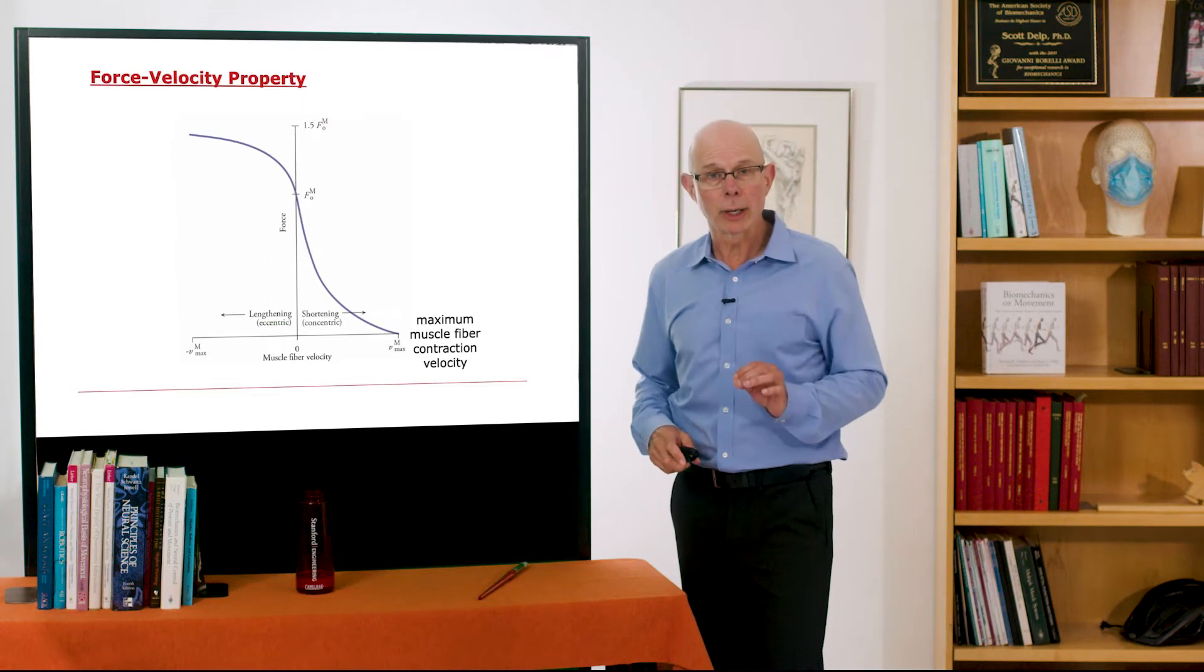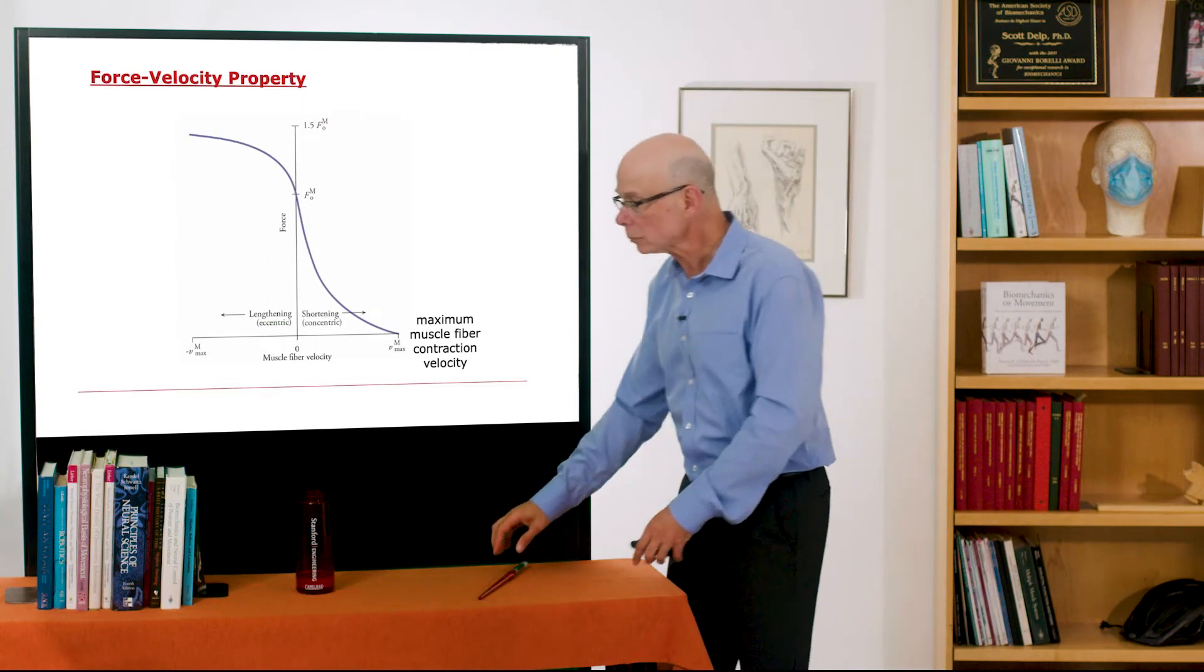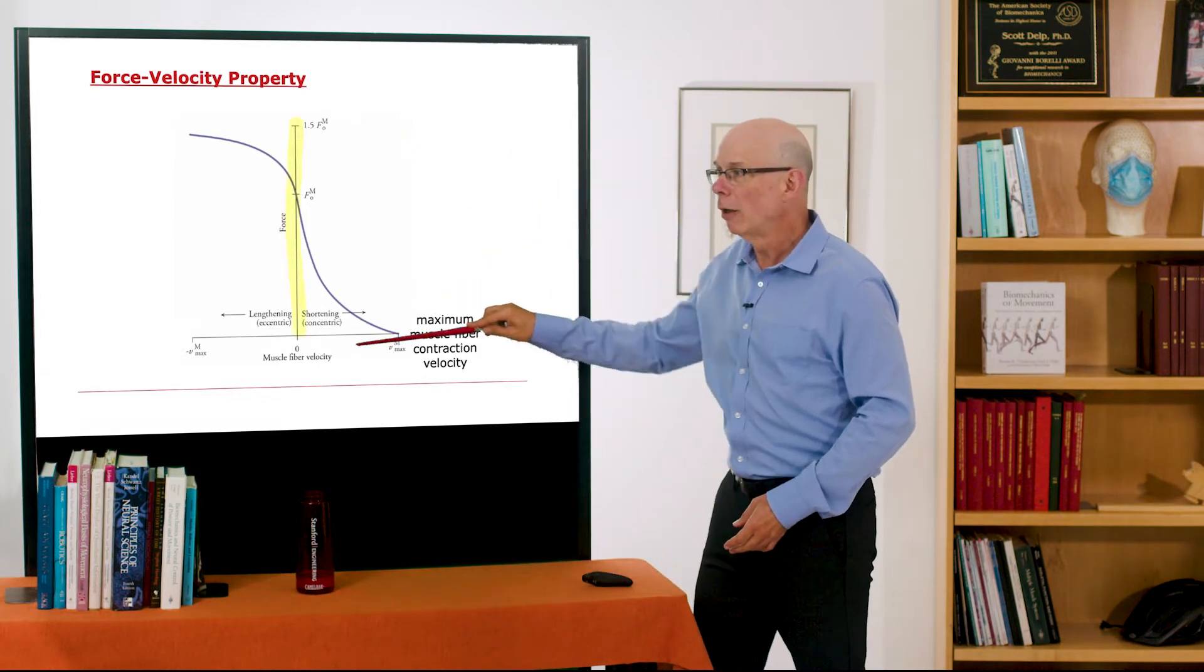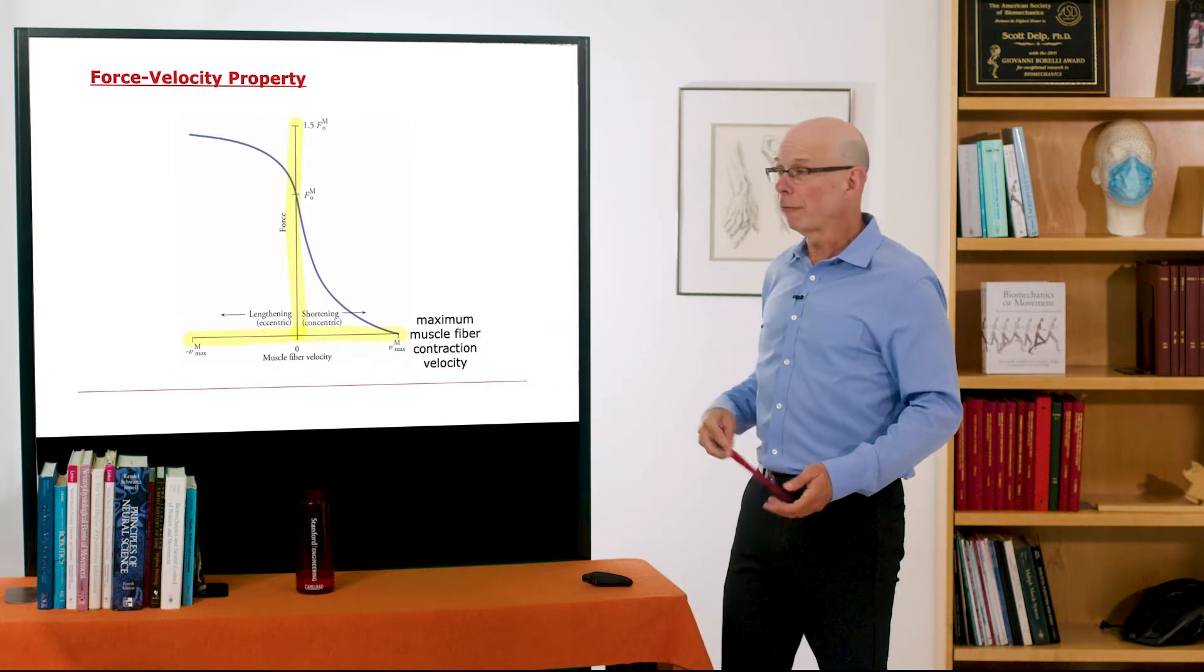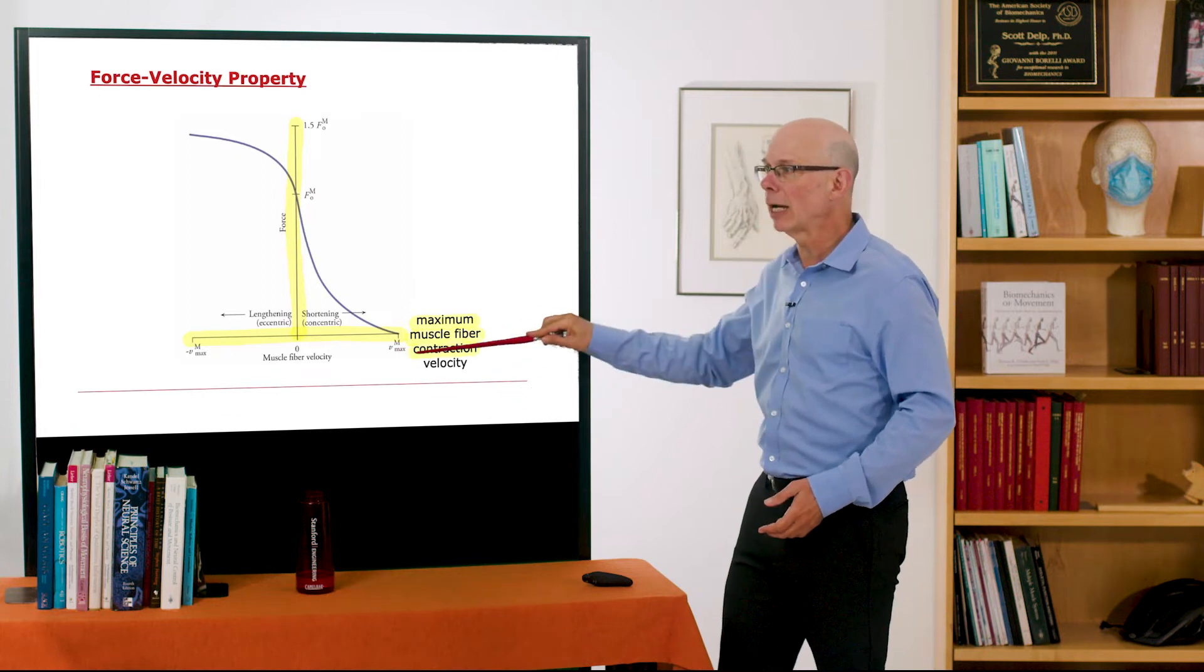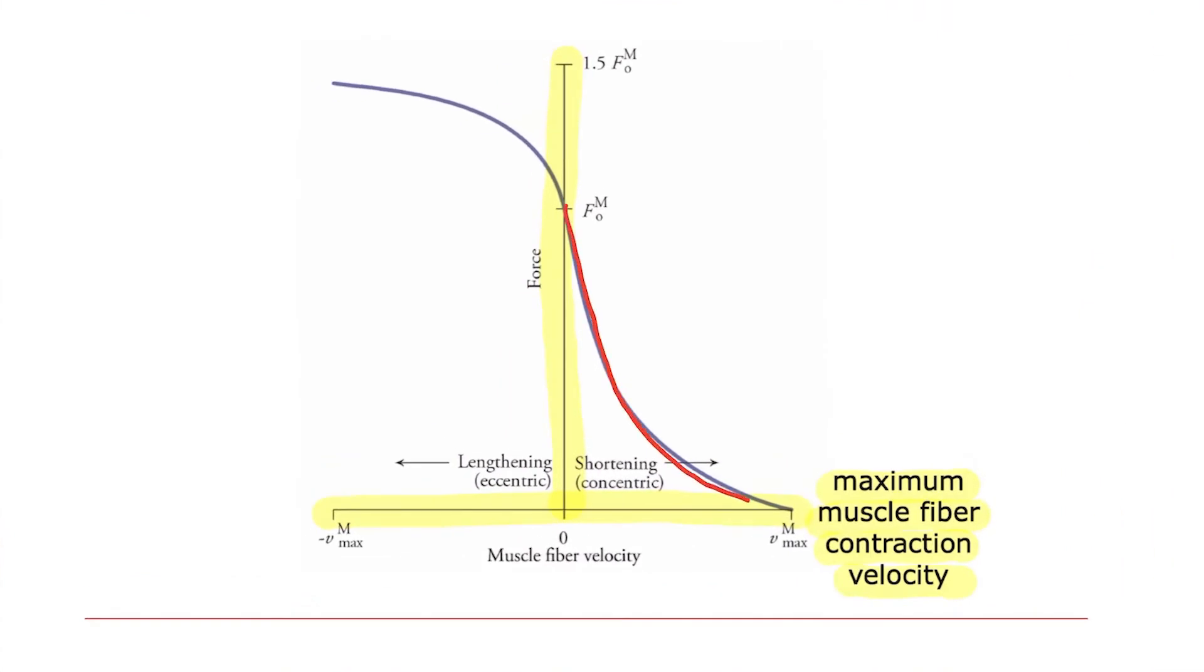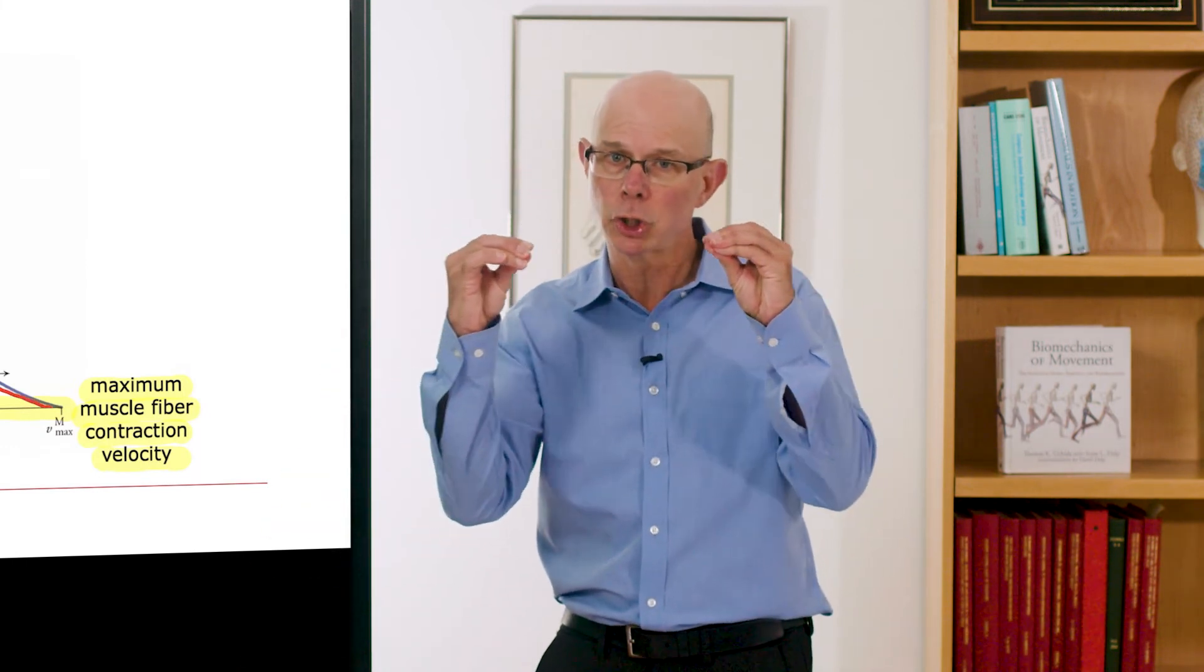A little bit more tricky is the force-velocity relationship of muscle. So what I'm plotting here is the force a muscle can generate versus its muscle fiber velocity. Also defining a term called the maximum muscle fiber contraction velocity here, Vmax over here. This is the shortening or concentric part of the force-length curve. That's when a muscle is doing work, it's generating force and shortening.